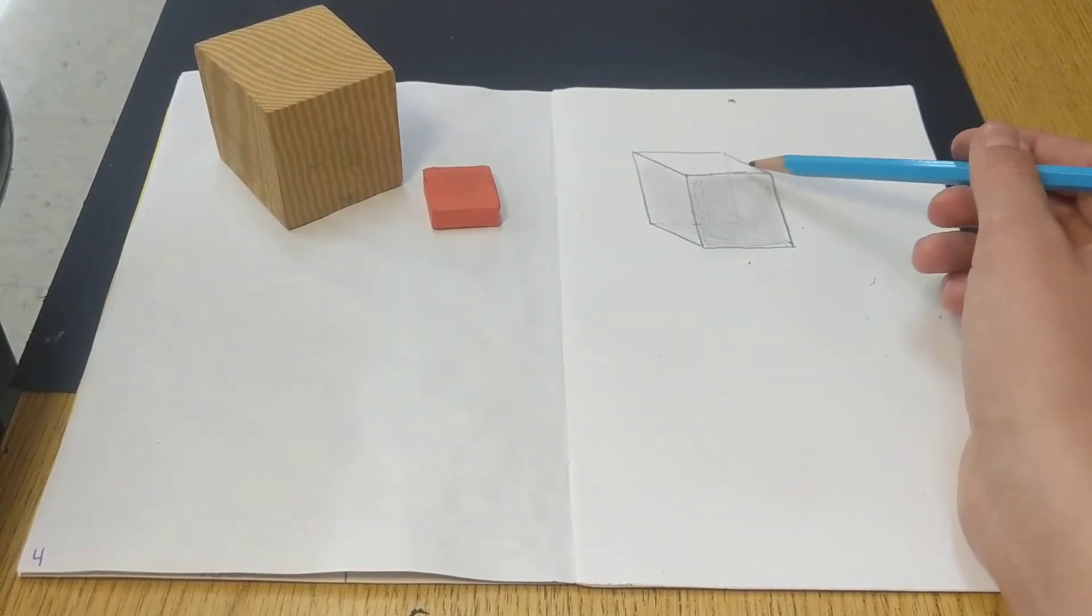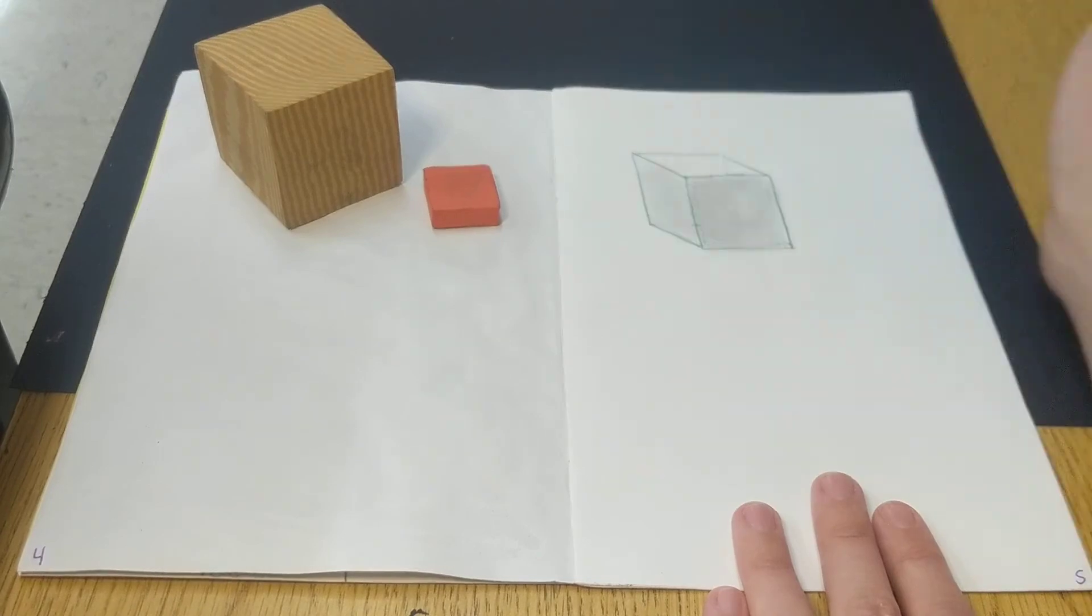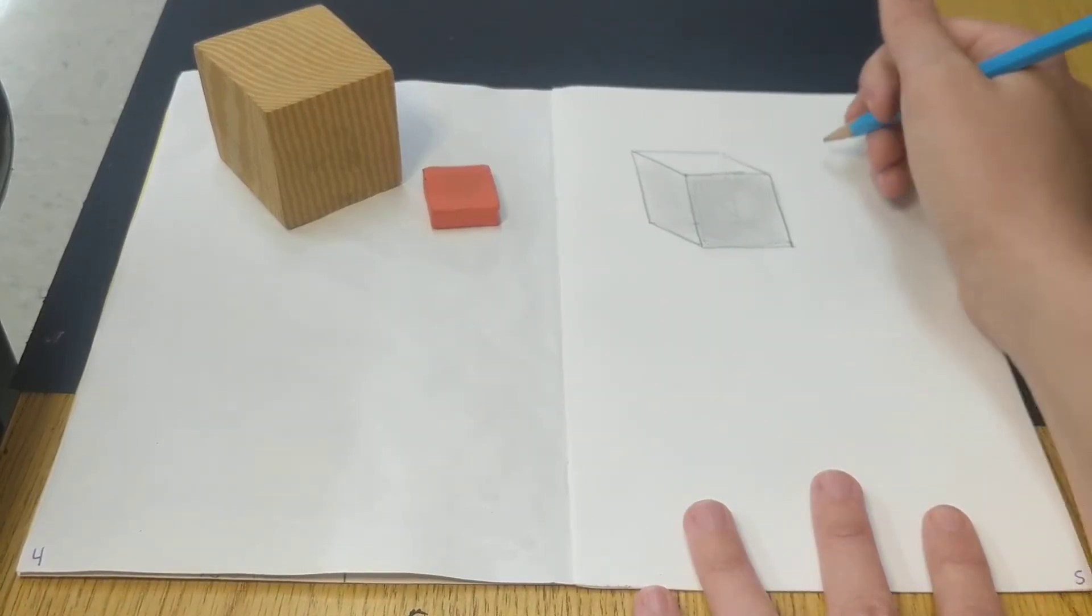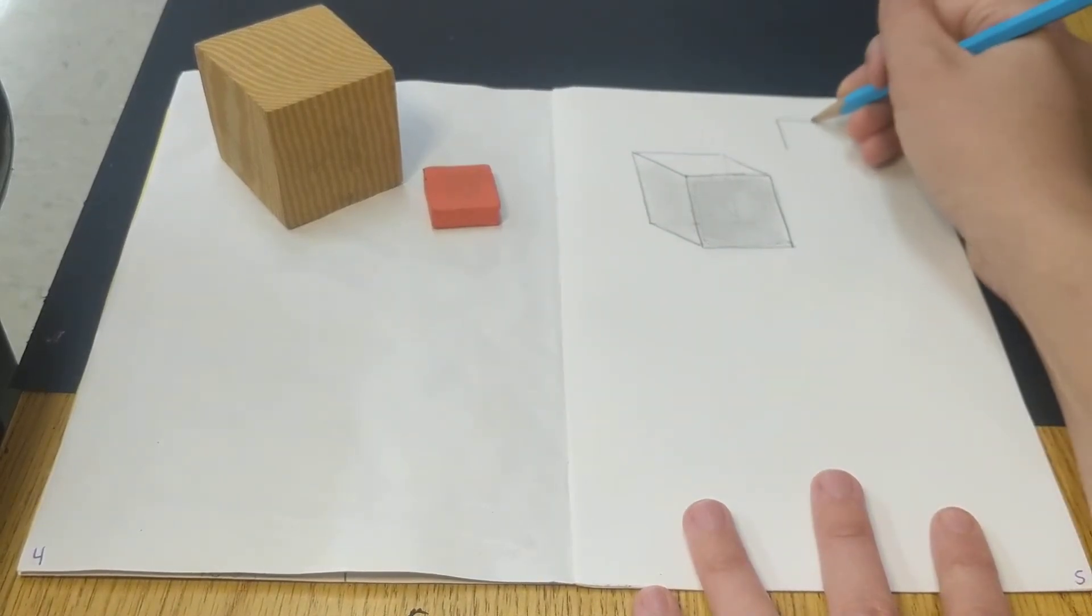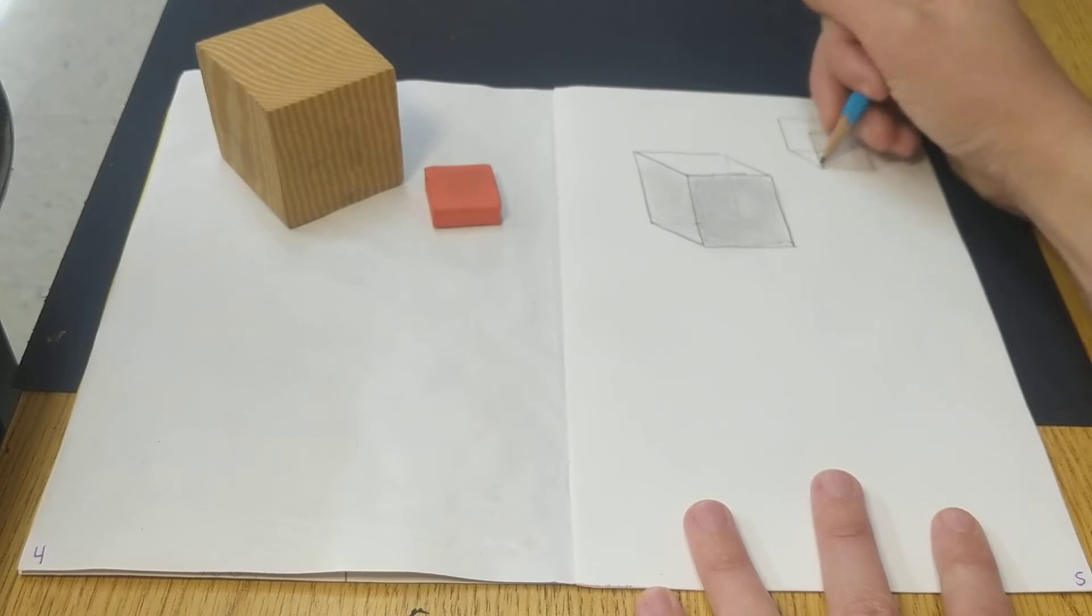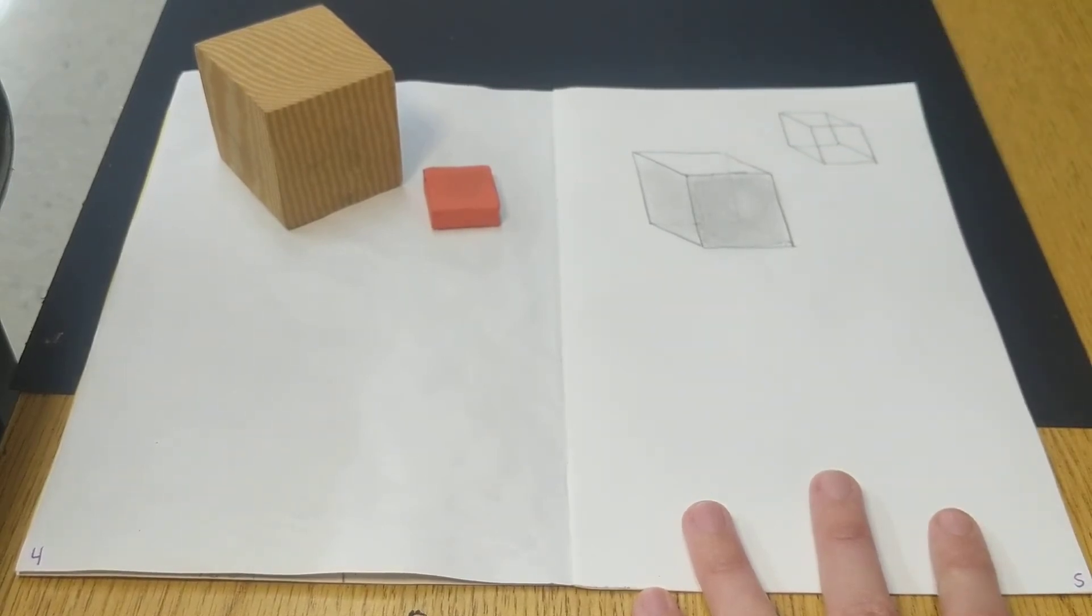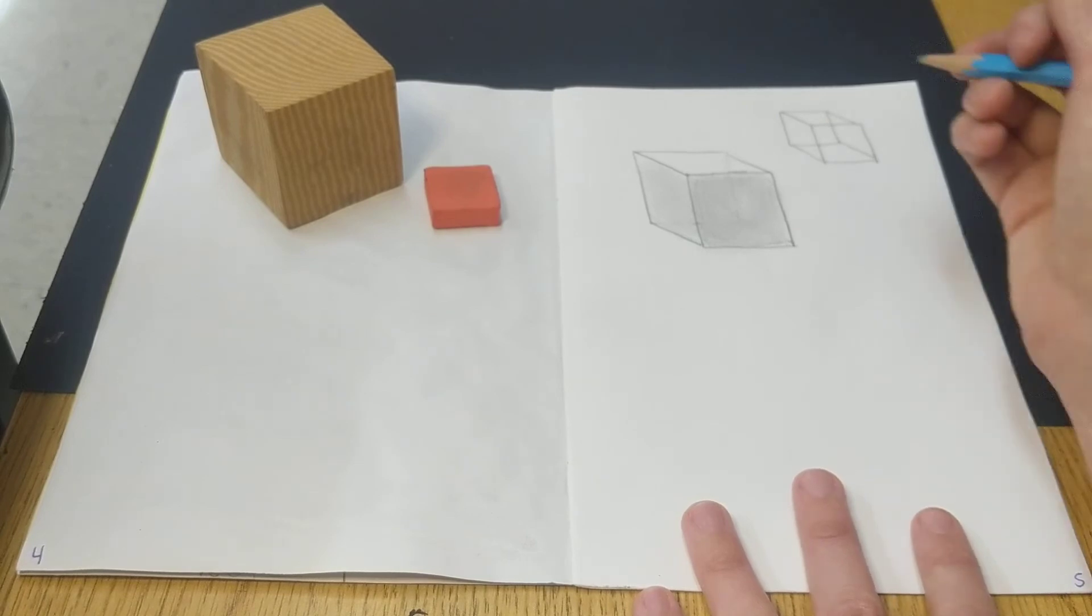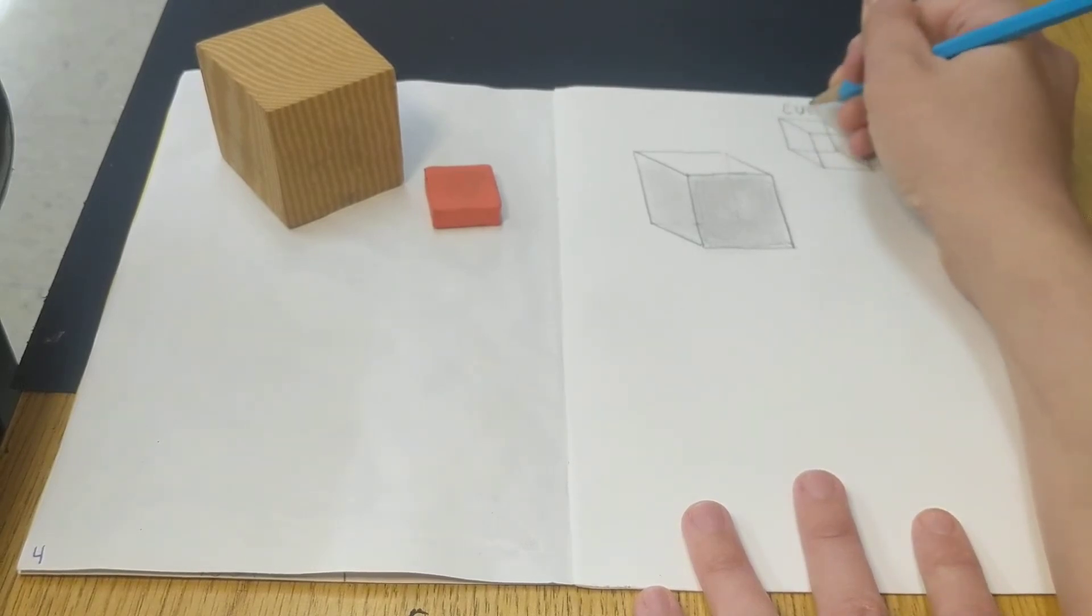And so see, that's how I go from a square to a cube. I'll show you again really quickly that you start with a square face. And then down below it, you add another square face. And you connect the corners with diagonal lines. And that will get you a cube.